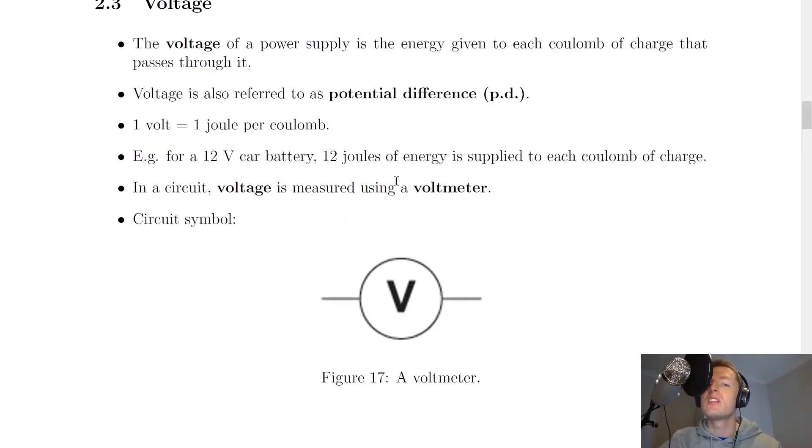So one volt is the same as saying one joule per coulomb, and that's handy to remember, but you can work it out if you know the definition. Another common question is to do with the definition of voltage but where it actually gives you a number to use as well. For example, a 12 volt car battery.